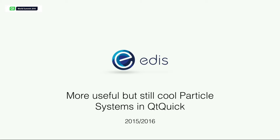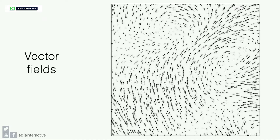Let me introduce you first to these arrows — vector fields. Have any of you heard about vector fields? Three or four. Well, this is just a matrix that represents the directions in space. That's a very simplistic way to view a vector field.